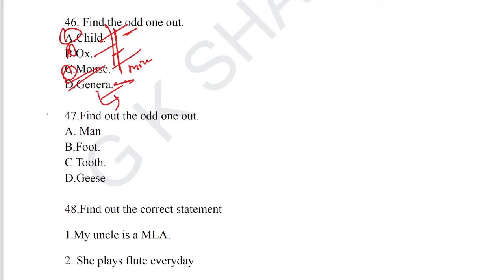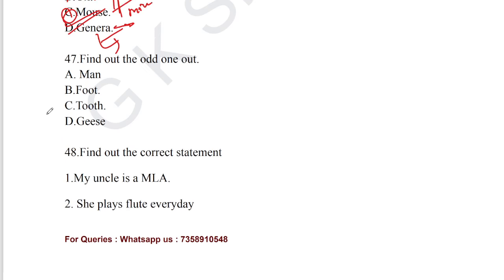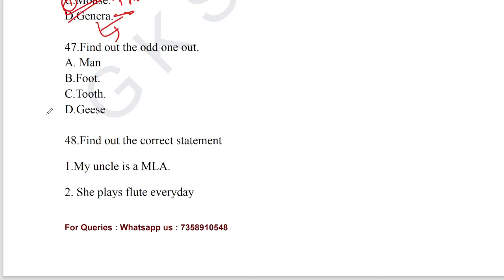Question number 47: find out the odd one out. Man, food, and tooth are singular forms. 'Geese' is the plural form of goose, making it the odd one out. Option D, geese, is the correct answer for question number 47, from the grammar section on singular and plural.